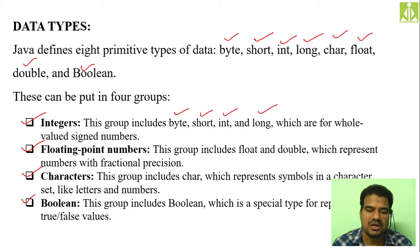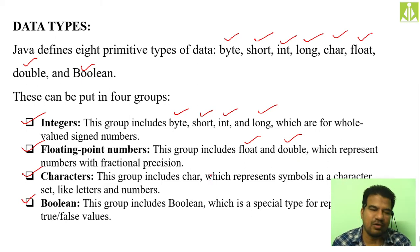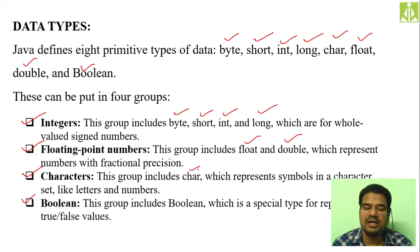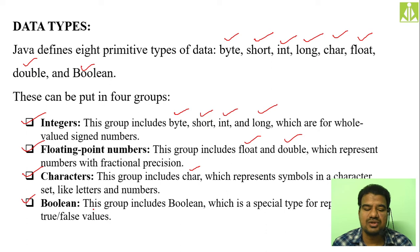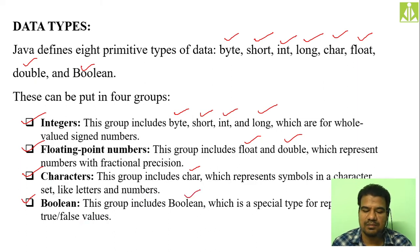The characters group includes only char — there is no wide character set or anything, just char, which represents symbols in a character set like letters and numbers. Then we have boolean — boolean type means only two values: true and false. To represent these two logical values we use the boolean type. So four categories overall: integer, floating point, character, and boolean.